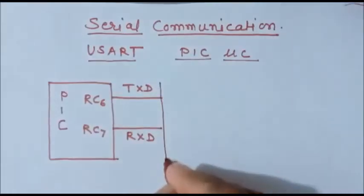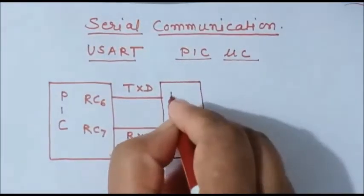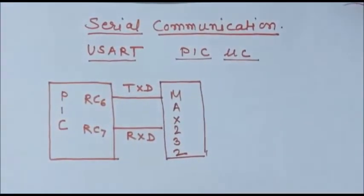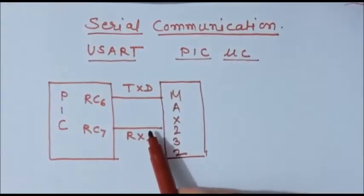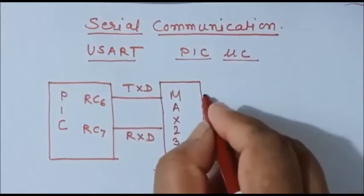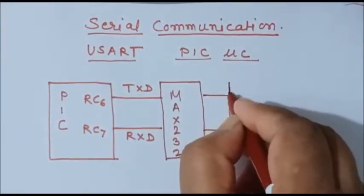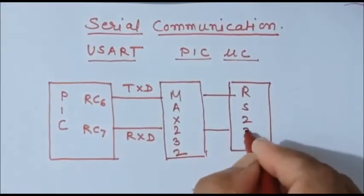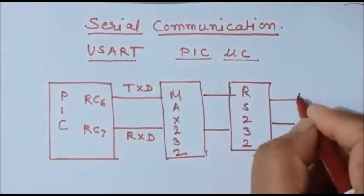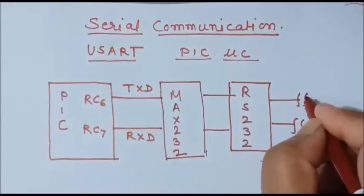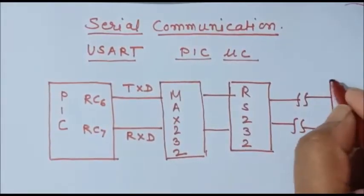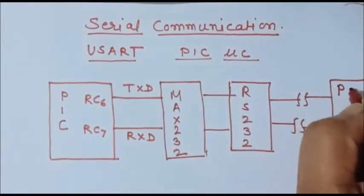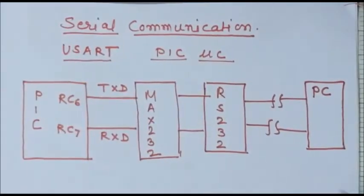For transmission of data, we have to use the MAX-232 IC, which will convert the TTL level signal of this PIC microcontroller into an RS-232 signal level, and then using RS-232 protocol, the data can be transmitted or received. Data can be transmitted serially. At the receiver side, we can use another PIC microcontroller or we can use a computer. We will use a PC to receive data on its COM port.